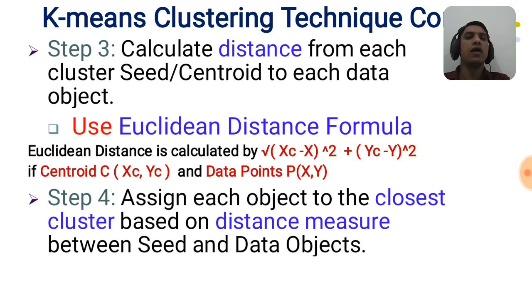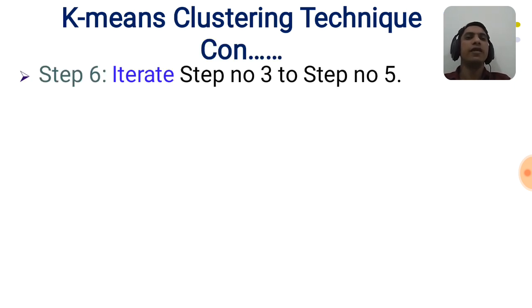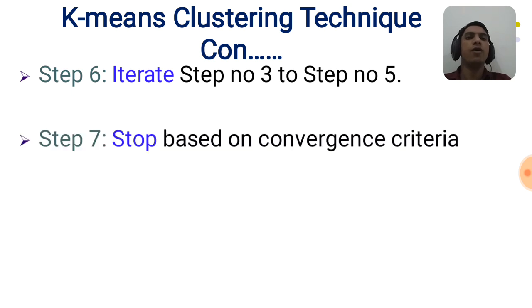Step number four: assign each object to the closest cluster based on the distance measured between the centroid seed and the data object. Step number five: compute the new centroid for each cluster. Step number six: iterate steps three through five.